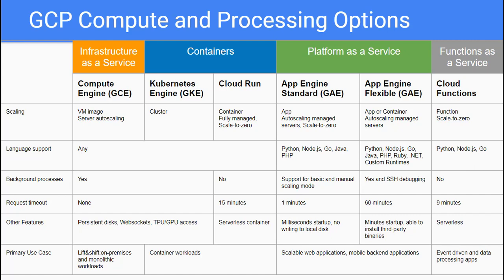There are four categories in compute and processing options: GCE in Infrastructure as a Service; GKE and Cloud Run for containers; GAE with standard and flexible options in Platform as a Service; and Cloud Functions in Functions as a Service. I collected feature comparisons such as scaling, language support, background processes, and request timeout to help you select the right service in your exam.